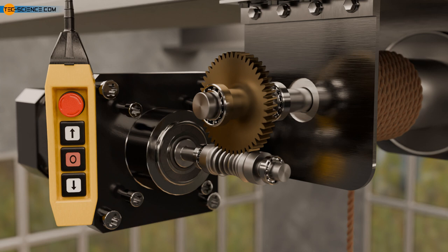If self-locking is not required, the focus is usually on maximizing efficiency. Efficiencies of well over 90% are possible with non-self-locking worm drives. If high efficiency and self-locking are required, the worm drive must be equipped with a brake.